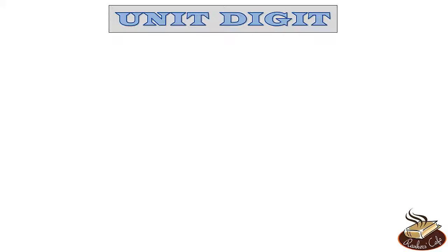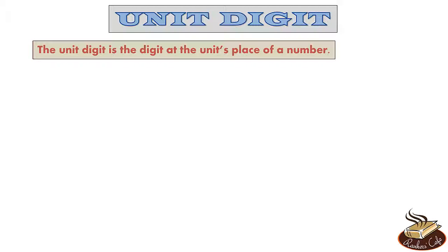So what do we mean by unit digit? The unit digit is the digit at the unit's place of a number. For example, in the number 54128, 8 is the unit digit. When numbers are written like this, we can simply look at the number and find its unit digit.